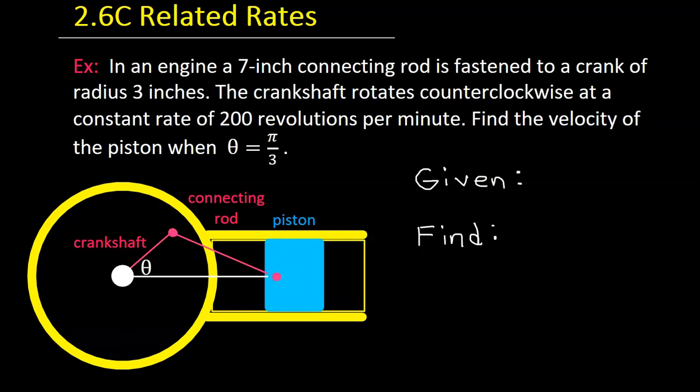I really want you to focus on two things. What are we given and what are we trying to find? So, the key thing that we're given, other than a couple of lengths, is that the crankshaft rotates counterclockwise at a constant rate of 200 revolutions per minute. As soon as you see the word rate, you should be thinking that's going to be some kind of d/dt.